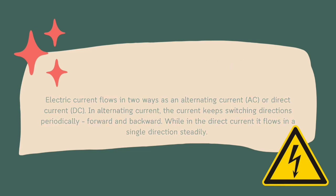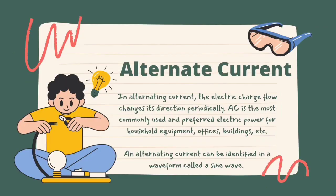In alternating current, the electric charge changes its direction periodically. AC is the most commonly used and preferred electric power for household equipment, offices, buildings, etc. It was first tested based on the principles of Michael Faraday in 1832 using a dynamo electric generator. An alternating current can be identified in a waveform called a sine wave, which can be referred to as a curved line.